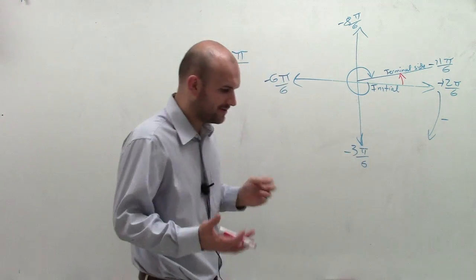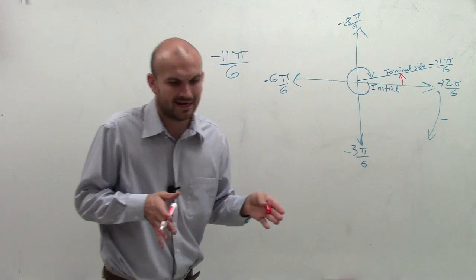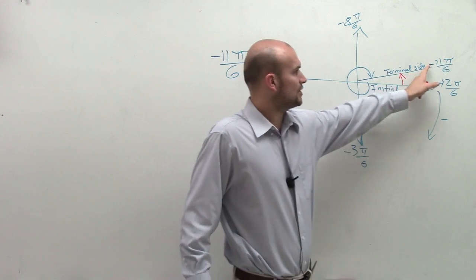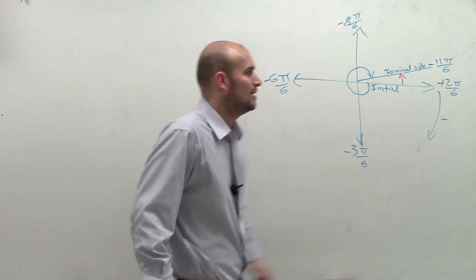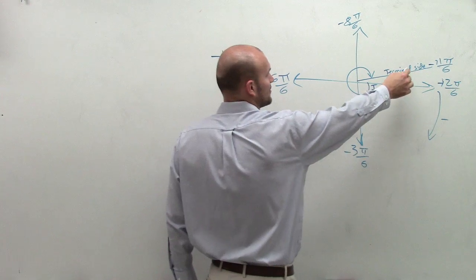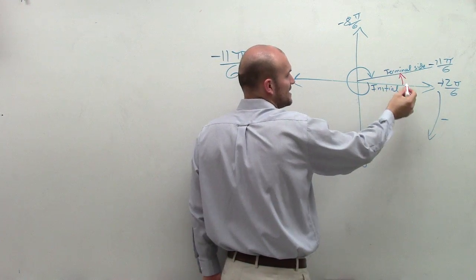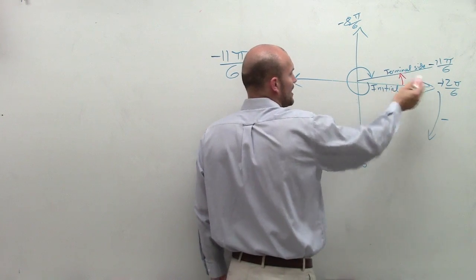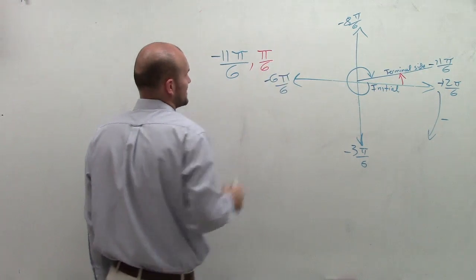All we need to know is to go from negative 11 pi over 6 to negative 12 pi over 6, how far do I need to go? All I need to do is go a distance of pi over 6. However, I'm not looking for another negative distance. If I start on this terminal side and I go to here, how far do I have to travel? I only have to travel pi over 6.